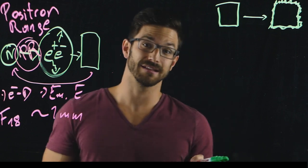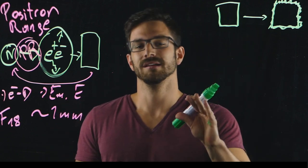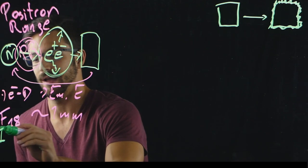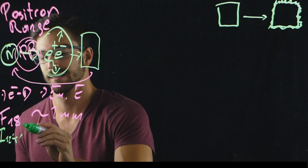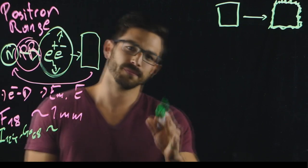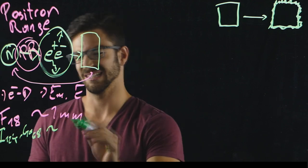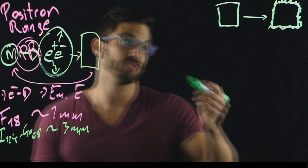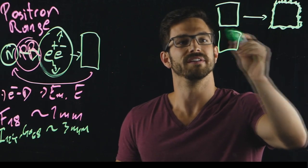This changes dramatically when we increase the positron range of the tracers. We use for example iodine-124, gallium-68, where we are in a positron range regime of about 3 mm, and this 3 mm when we do the same scan...